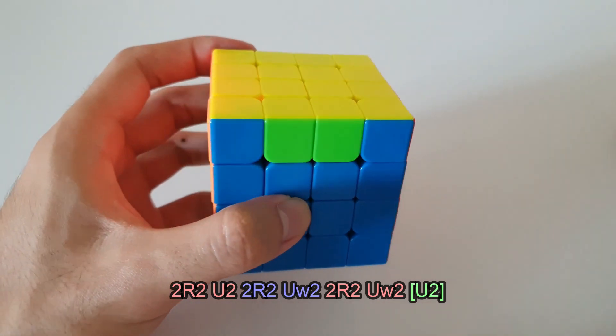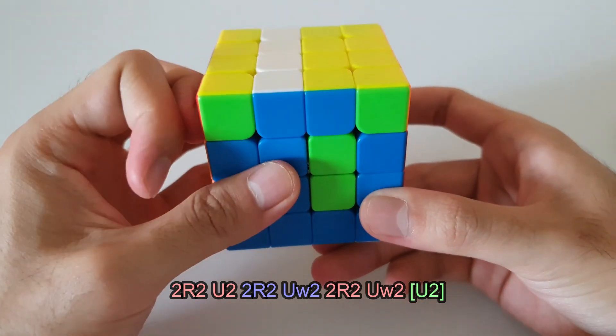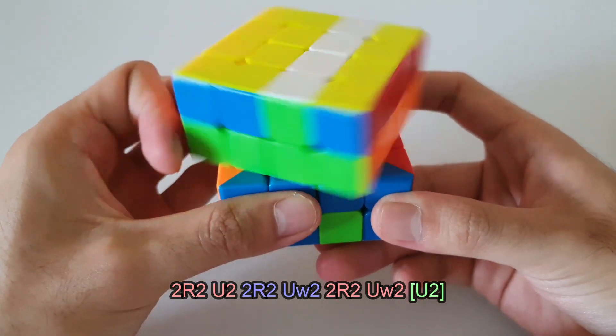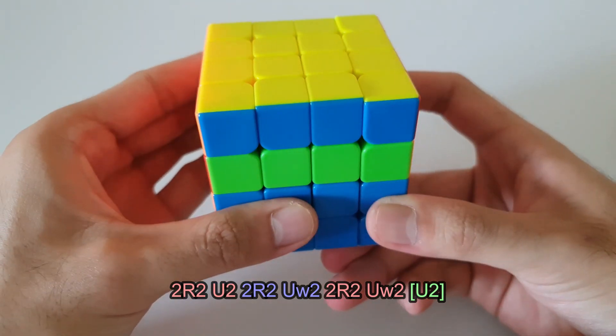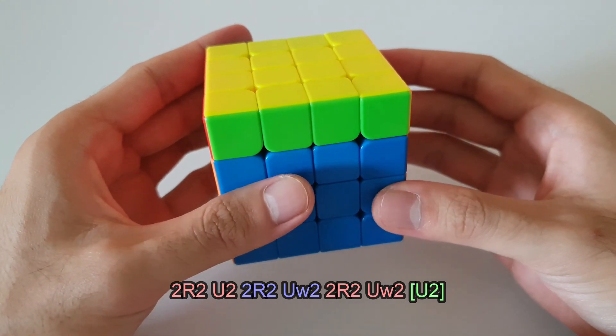So just going over that again quickly to make sure you got everything. So 2R2 U2, 2R2 wide U2, 2R2 wide U2. And there's also a U2 at the end, but this can be considered as AUF.